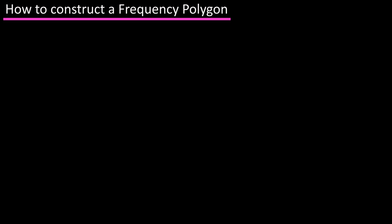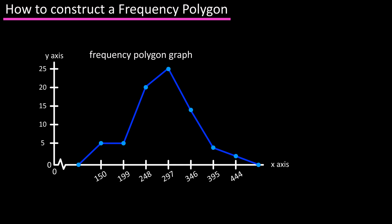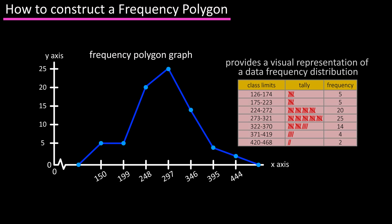In this video we're going to go over how to construct a frequency polygon. A frequency polygon is a graph that provides a visual representation of a data frequency distribution. It uses a line that connects the frequencies of the classes at the midpoints of the classes.